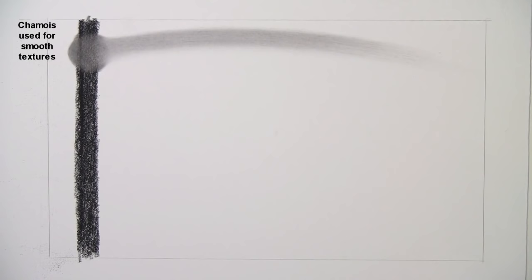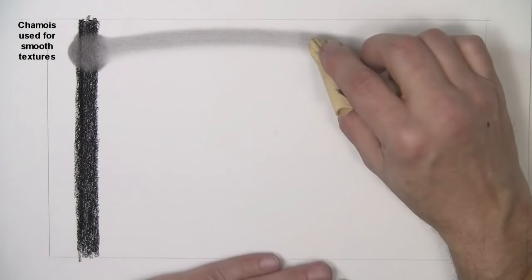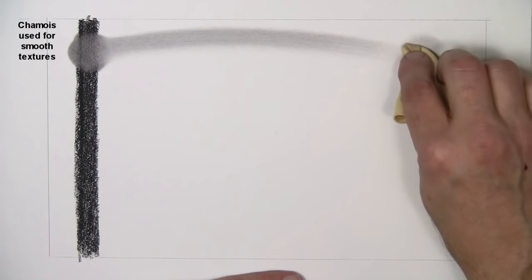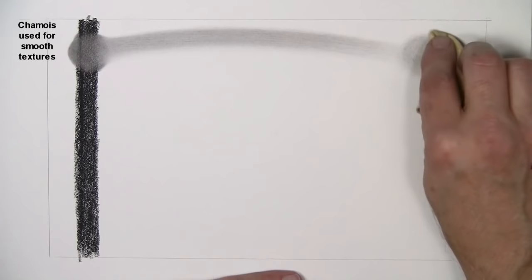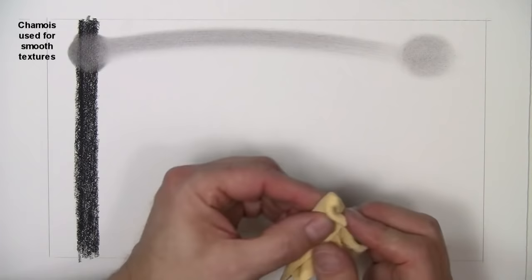As you can see that makes a pretty nice smooth texture there. Now over here on the side I'm going to add a little bit more in a circular pattern. And a chamois is also good for lightening values. I need to get to a clean place of the chamois here. And by going over this again it will lighten that value.